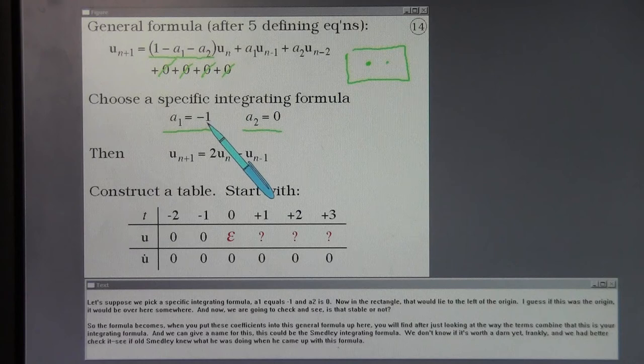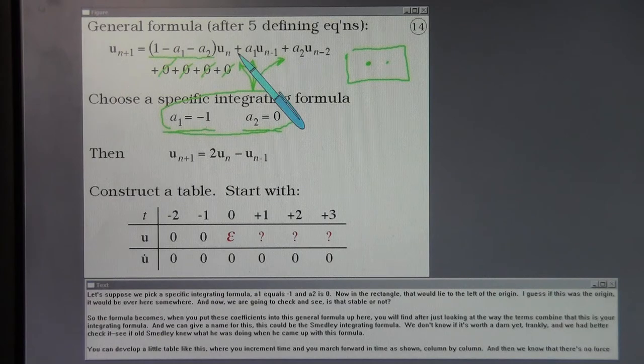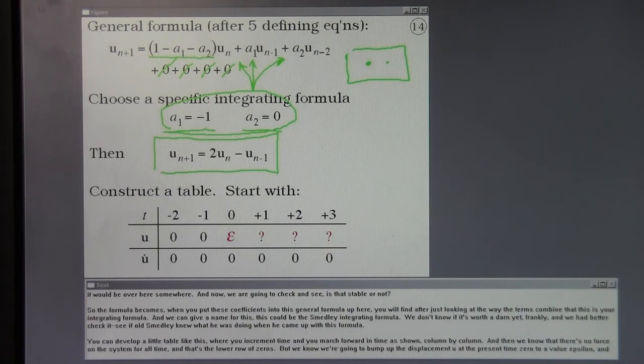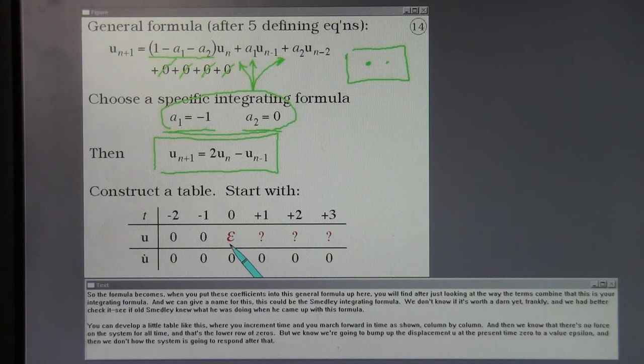So the formula becomes when you put these coefficients into this general formula, you will find after just looking at the way the terms combine that this is your integrating formula. And we can give a name for this. This could be the Smedley integrating formula. We don't know if it's worth a darn yet, frankly, and we better check it. You can develop a little table like this where you increment time and you march forward in time as shown column by column. And then we know that there's no force on the system for all time and that's the lower row of zeros. But we know that we're going to bump up the displacement U at the present time zero to a value epsilon. And then we don't know how the system is going to respond after that.